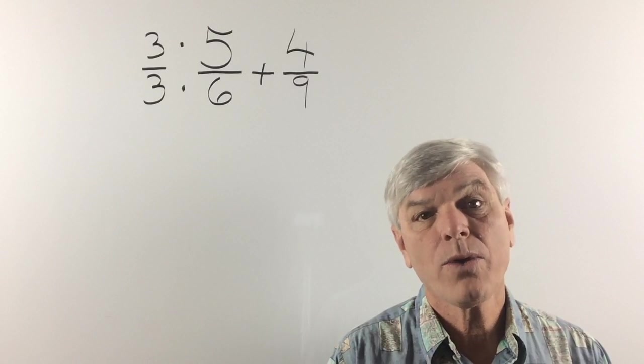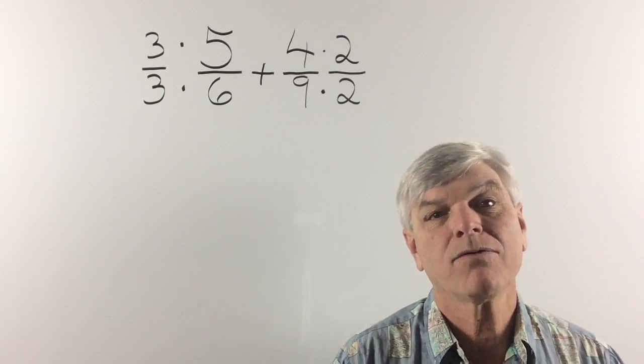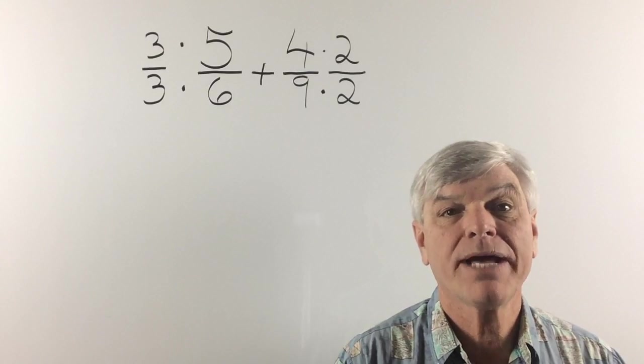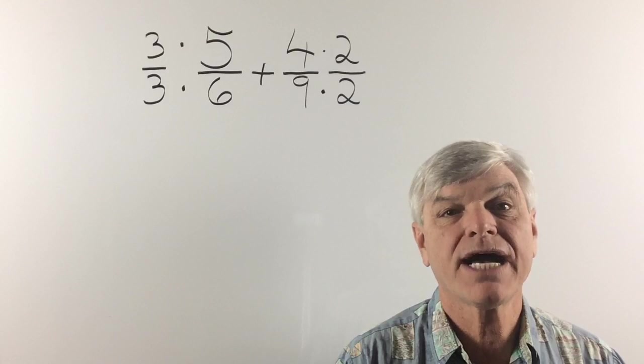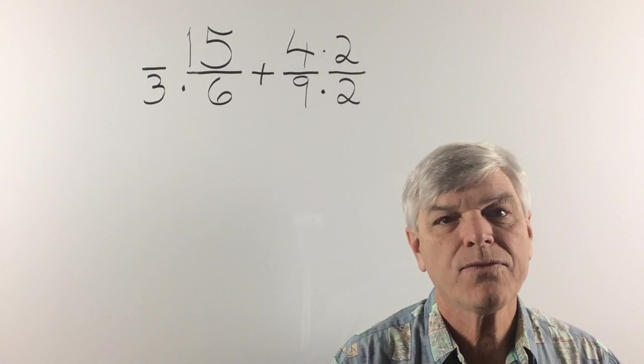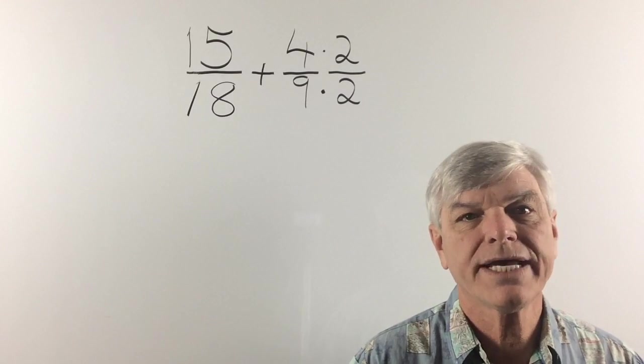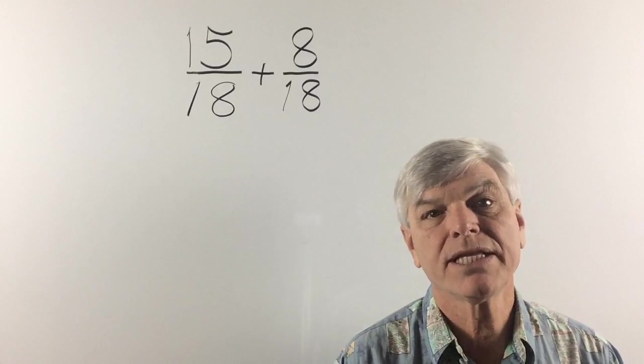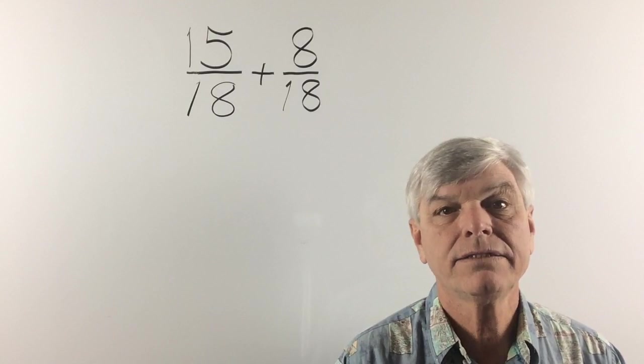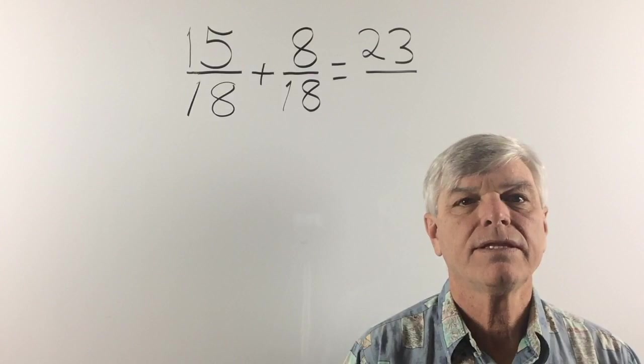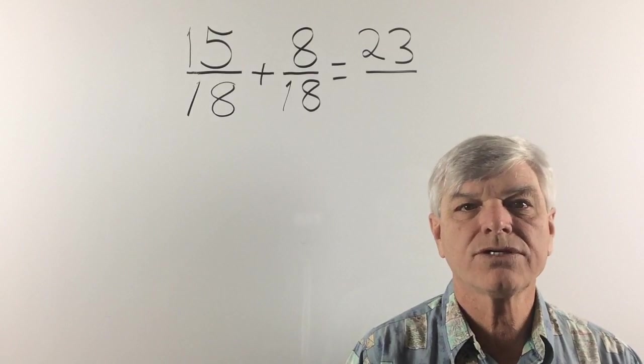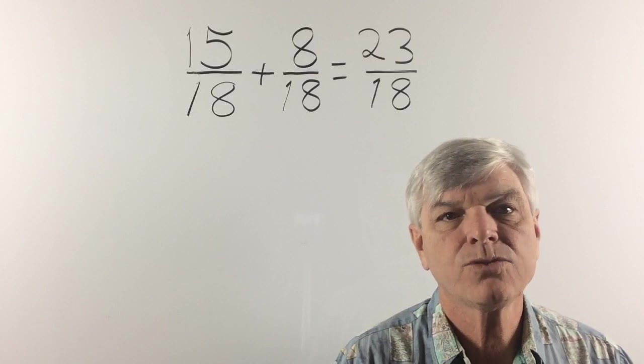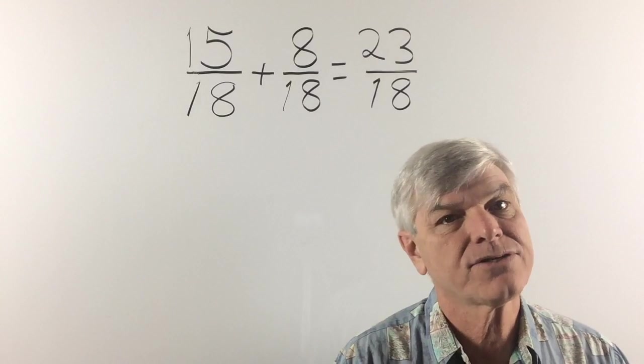Now the 9, we are going to multiply times 2. And of course that's 2 for the denominator and the numerator. Now let's go back to the first number. 3 times 5 is 15. And 3 times 6 is 18. 2 times 4 is 8. And 2 times 9 is 18. Well now the fractions have a common denominator so we can add. 15 plus 8 is 23. And of course our denominator remains the same. Our answer is 23 eighteenths which cannot be reduced so that is our final answer.